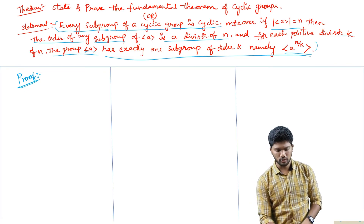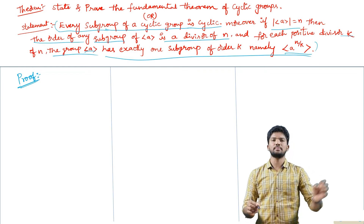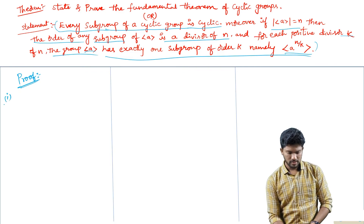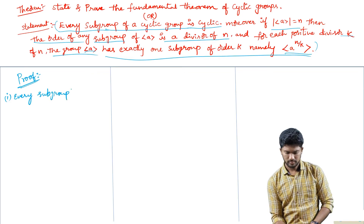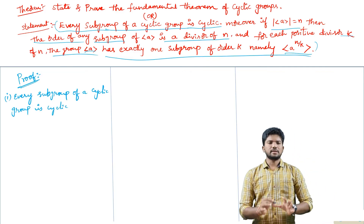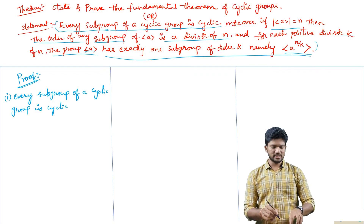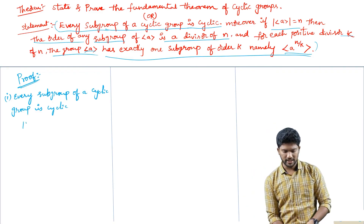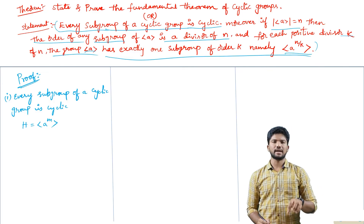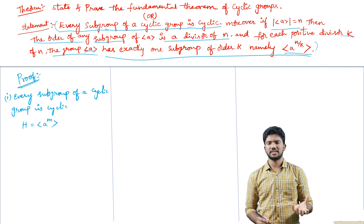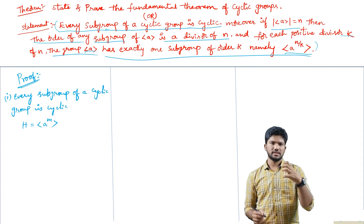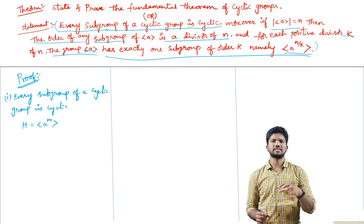The first part — every subgroup of a cyclic group is cyclic — we discussed in the previous lecture, where we took capital H as a subgroup generated by A power m. By using the division algorithm, we proved that capital H also satisfies the cyclic group condition. Therefore, capital H is a cyclic group.